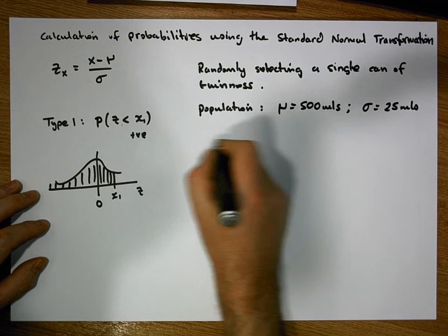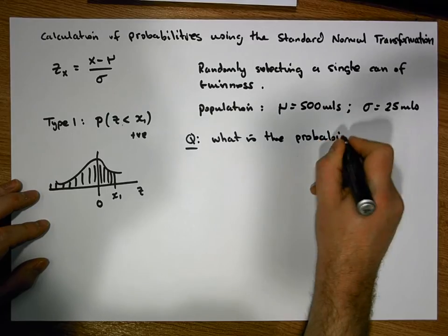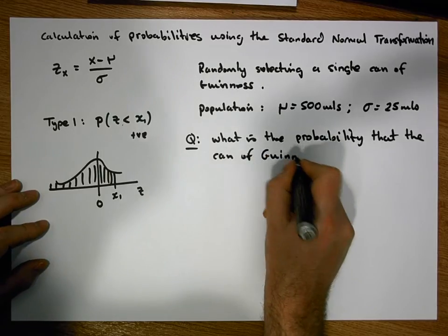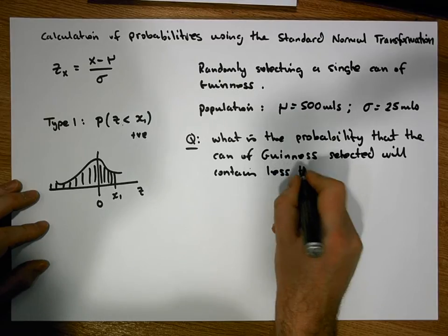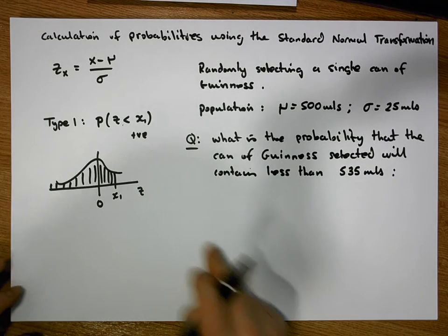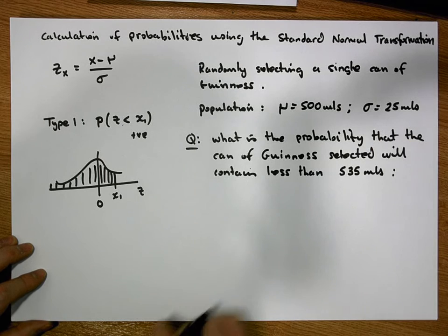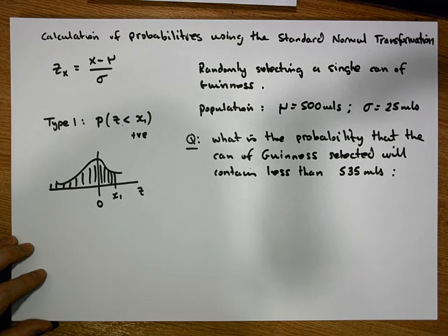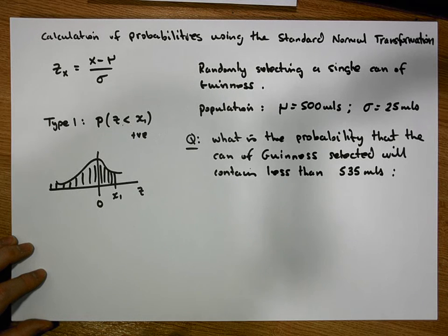The question that we have is: what is the probability that the can of Guinness selected will contain less than 525 mils? Every question will give you a scenario. You'll always be given the population mean and the population standard deviation, and the question will ask something about the random selection of a single can from that population. In this case, what is the probability that the can selected contains less than 525 mils?